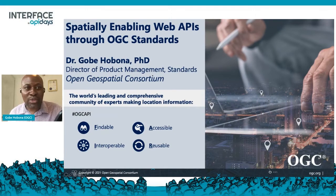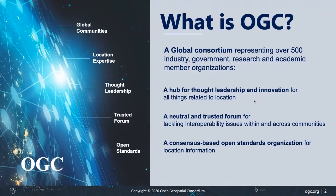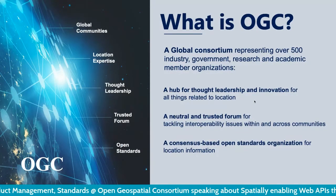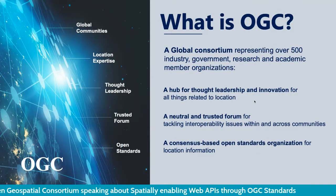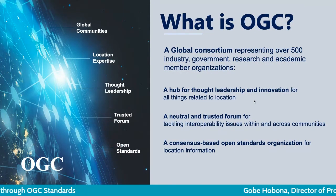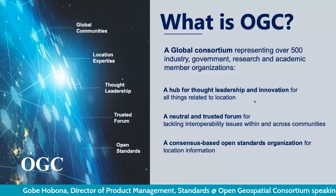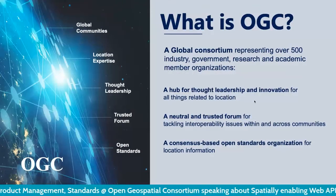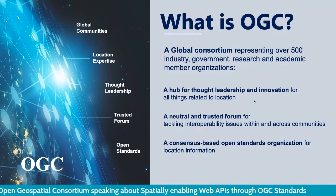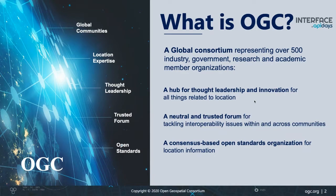Before I delve into the detailed aspects of my presentation, let me give you an overview of the OGC, the Open Geospatial Consortium. The OGC is a global consortium representing over 500 member organizations from the government, research, and academic sectors, as well as the private industry sectors. We are a consensus-based, open standards organization focusing primarily on location information — geospatial information — and we are seen as a hub for thought leadership and innovation for all things related to location.